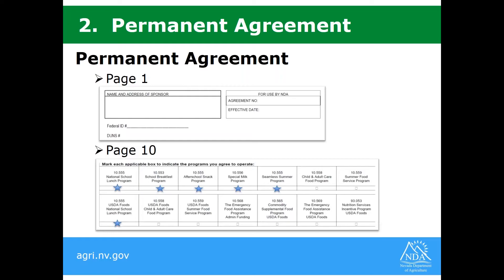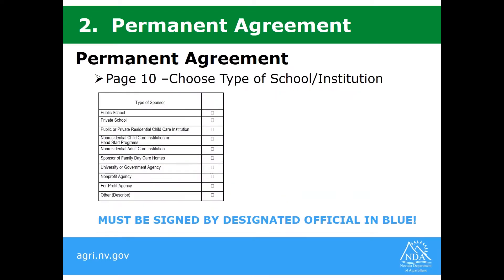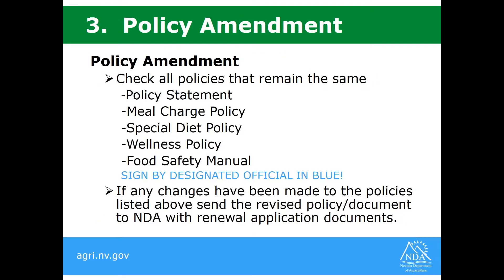In the second row, it's asking about commodities, and the only box that should be checked — if you wish to receive commodities — is the first box, 10.555, USDA Foods, the National School Lunch Program. The last section on page 10 of the Permanent Agreement, you have the choice to choose what type of institution you are, and then it must be signed by the designated official in blue.